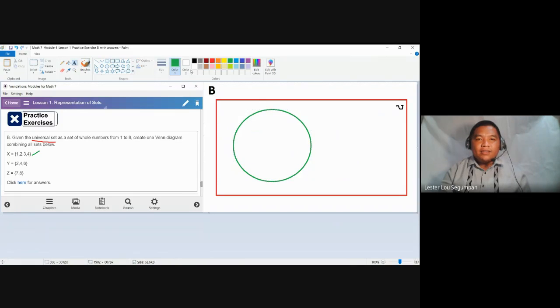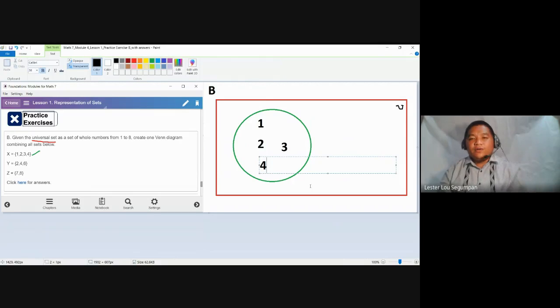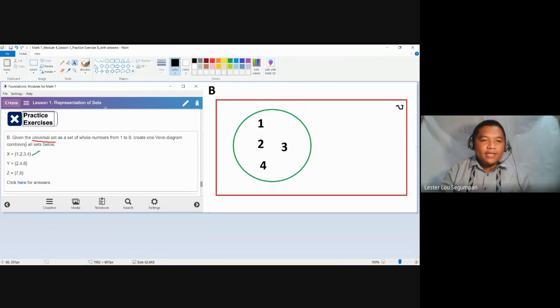And then the elements are 1, 2, 3, and 4. Take note this is set X. That's why I colored it green. So you have 1, 2, 3, 4. Arranging the elements here depends on you. As for me, that's okay. But there are some revisions that may happen when you deal with the remaining sets.